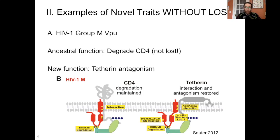VPU's new function is called tetherin antagonism. It does this because the human immune system and other primate immune systems have a protein called tetherin. The various SIVs use different proteins to deal with tetherin, but HIV-1 group M uses VPU to do it, and it does so through a completely new mechanism, which you can see on the right here. There are at least four specific amino acid interactions between VPU and tetherin that are required, so you need at least four new mutations for this interaction to occur. That confers tetherin antagonism. That same HIV-1 group M VPU has the ancestral function of degrading CD4 — it hasn't lost anything, but it has gained a completely new biochemical function.